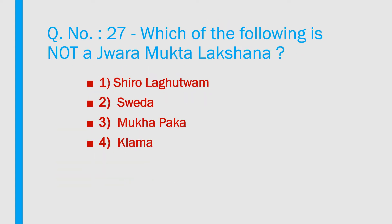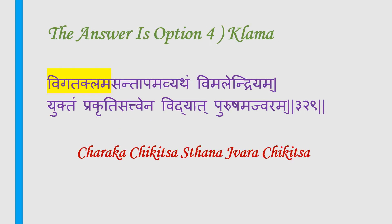Question number 27: Which of the four is NOT a jvara mukta lekshanam? Options: 1) Shiro laghutva, 2) Sveda, 3) Mukha praga, 4) Klama. Answer is option 4 — Klama. The lekshan of jvara mukti include vikata klama (loss of klama), vimalendriyam, yuktam pragruti, satvena, and purisham. So klama itself is not a sign of jvara mukti — rather its absence is. Reference: Charaka Chigilsa Sthana, Jvara chigilsa.